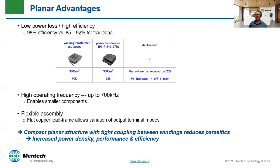The low loss results in about a 99% increase in efficiency. Planar transformers can run up to 700 kHz. That said, most customers stay under 500 kHz or so just to ease EMI effects.